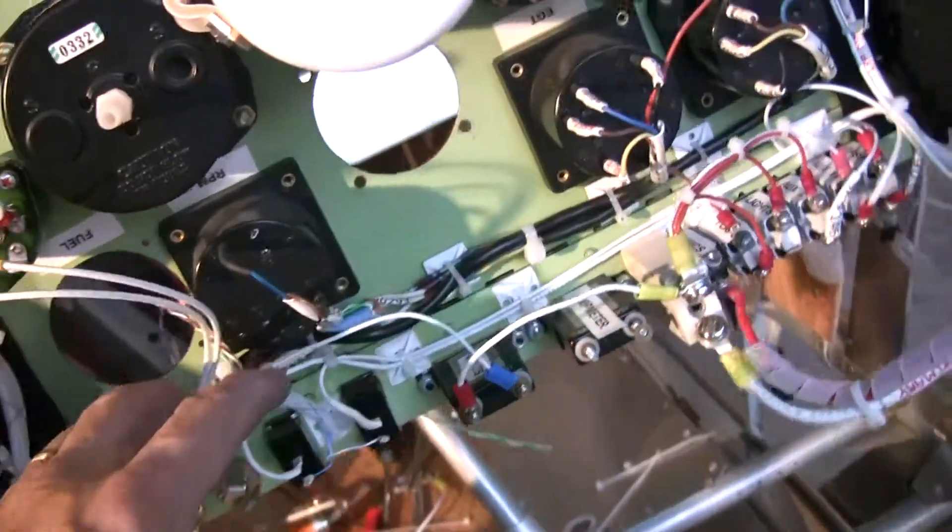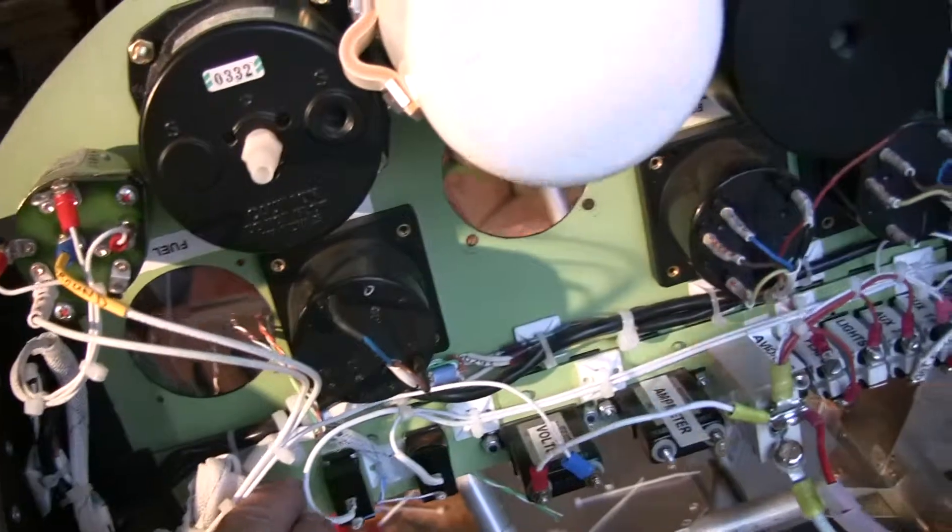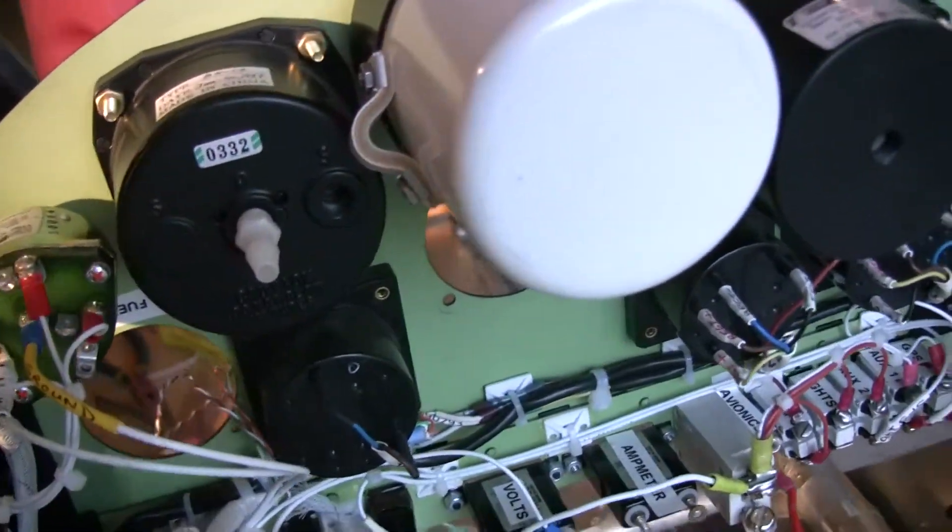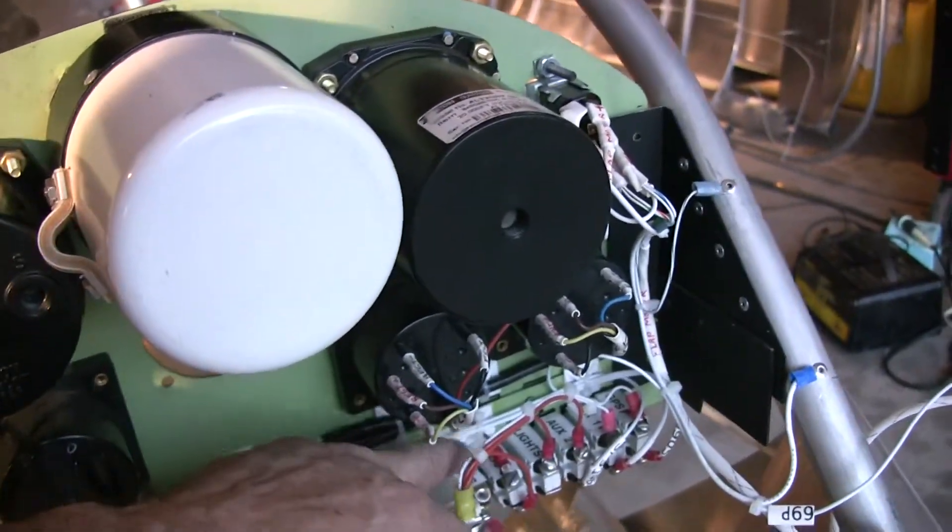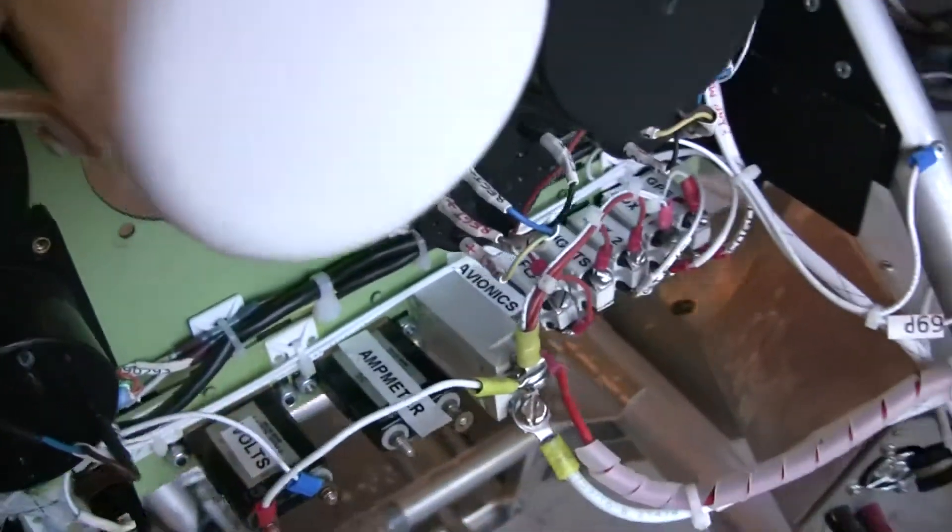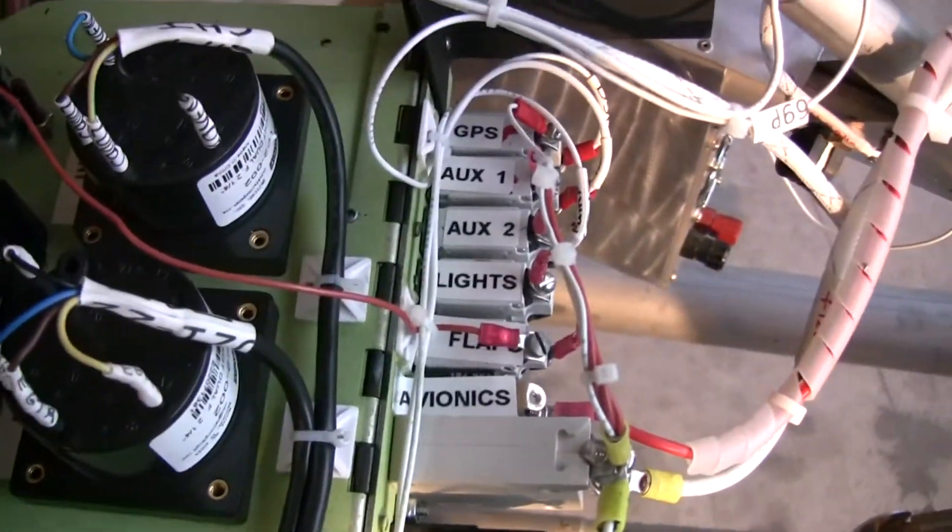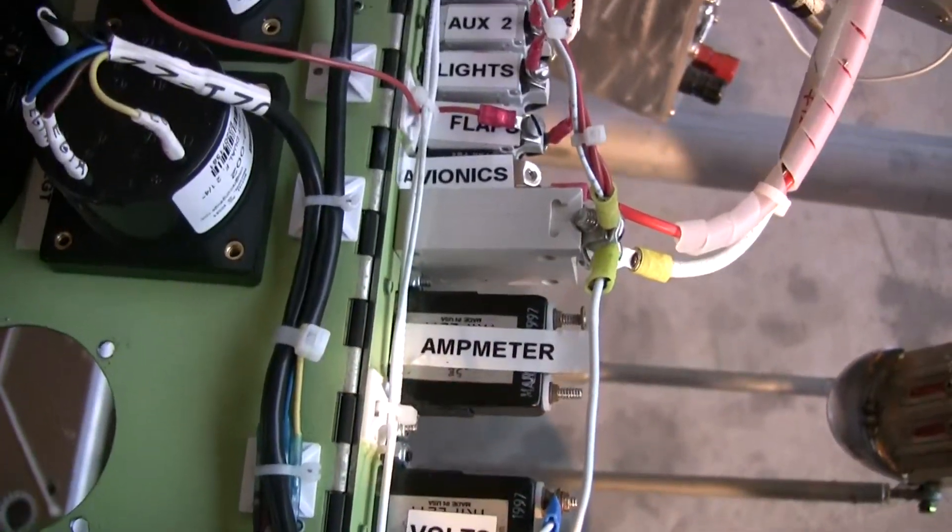The wiring is now completed for the RPM gauge, and as you can see everything is labeled: my switches for the fuel pumps, voltmeter, ampmeter, master, and then each breaker has been labeled. So when you're working on this thing you at least have an idea of what goes to where.